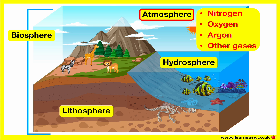Nitrogen makes up about 78% of the atmosphere. Oxygen makes up about 21% of the atmosphere. Argon makes up about 0.9% of the atmosphere, and the remaining gases make up 0.1%. The atmosphere is held in place around the Earth by the force of gravity, almost like a bubble around the Earth.